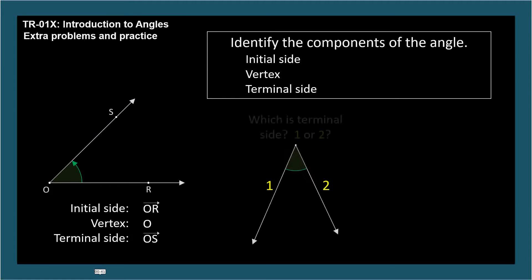Which is the terminal side of this angle, 1 or 2? By the way, when the arc has no arrow, we'll assume it's a positive angle. A counterclockwise positive arc would terminate on side 2. If the arc were drawn with an arrow denoting a negative angle, then the terminal side would be side 1.